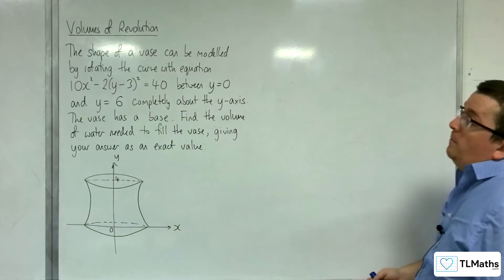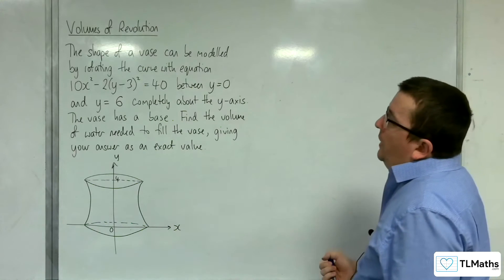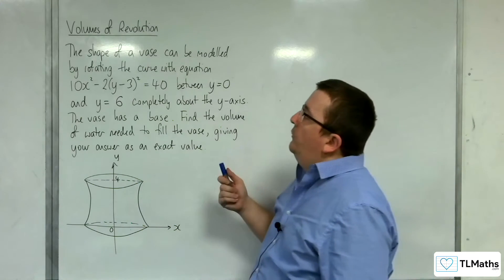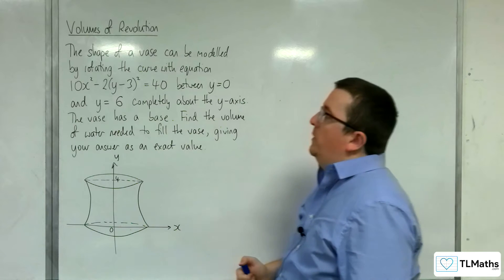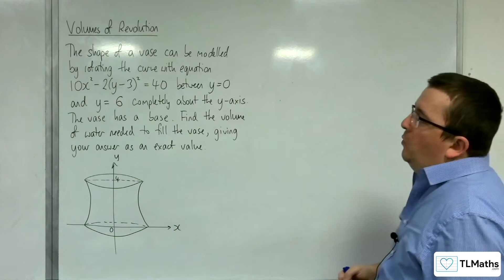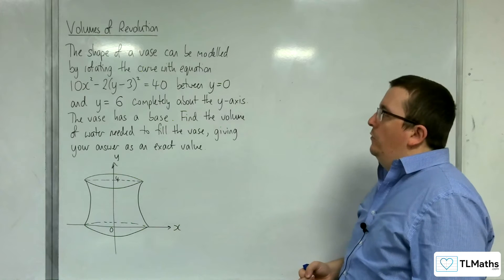In this video, we've got the shape of a vase that can be modeled by rotating the curve with equation 10x² - 2(y-3)² = 40, between y=0 and y=6, completely about the y-axis.